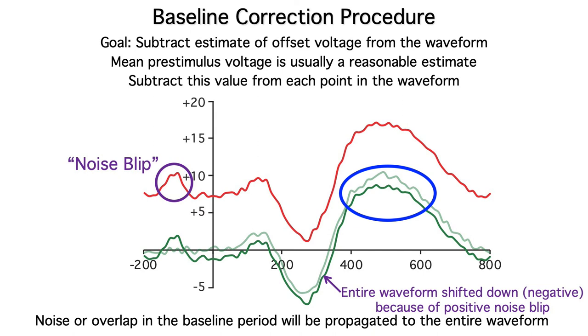So, when you're looking at ERP waveforms, even after averaging, if you see a lot of noise in the baseline period, that noise will have a big impact on the amplitude measures in the post-stimulus period.